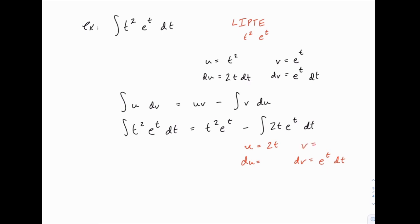So then we need to calculate du, which is going to be 2 dt, and v, which is still e to the t.